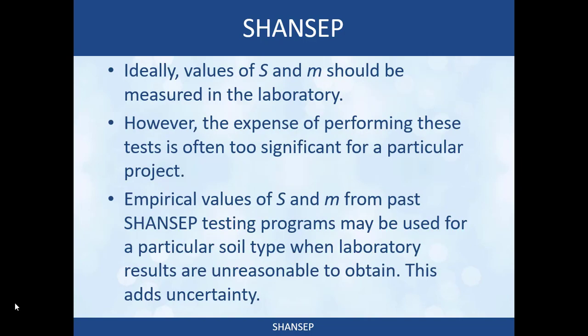Ideally, the values of S and M should be measured in the laboratory — go out to the field, get samples, use the SHANSEP procedure, and regress values of S and M from those laboratory data. However, the expense of performing these tests is often too significant for a particular project. If you can't run the lab tests, you can use empirical values of S and M from past SHANSEP testing programs that have been published, including those in Ladd's paper. This adds some uncertainty because you don't know how representative those tested soils are of the soils at your site, but it can still be reasonable.